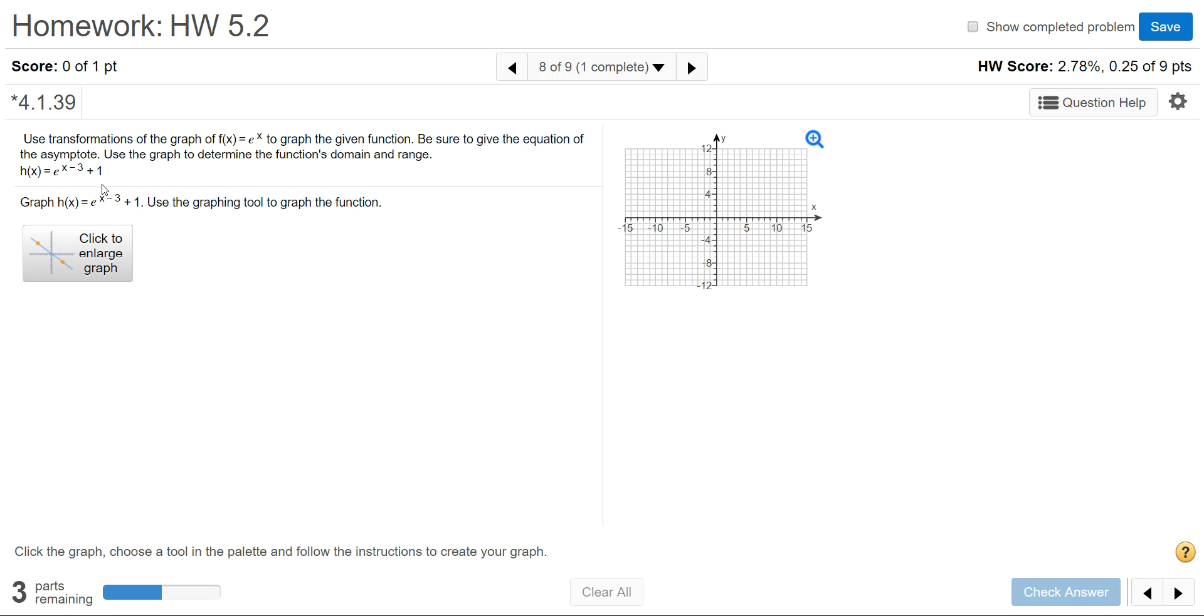First, we need to identify the transformations on the original graph. Anything that's added or subtracted in the exponent is a horizontal shift. Horizontal shifts will always be opposite of the original sign, so in the power, minus 3 changes to positive 3, which is a right 3 movement.